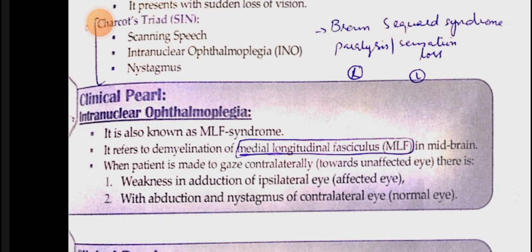Internuclear ophthalmoplegia from medial longitudinal fasciculus involvement causes adduction defect in the same eye and horizontal nystagmus with abduction in the opposite eye; diplopia can also occur. Cerebellar involvement causes ataxia, intention tremors, dysarthria, and loss of bladder control. Autonomic dysfunction includes impotence and constipation. Cerebral involvement causes memory loss, personality changes, emotional lability, anxiety, and depression. Neuropathic pain occurs due to hyperesthesia and trigeminal neuralgia. Next we will cover the course, diagnosis, and treatment of multiple sclerosis.